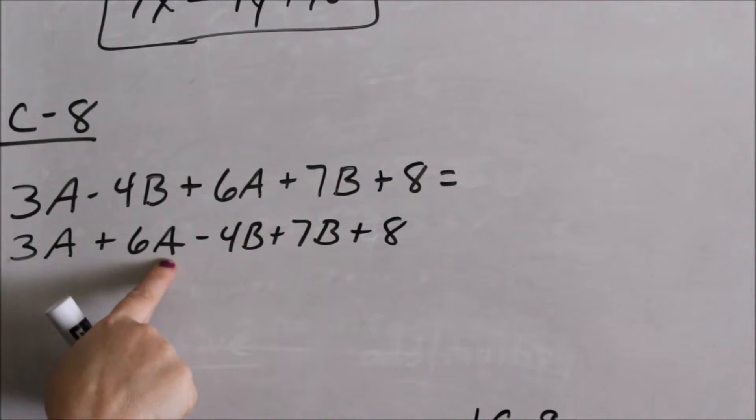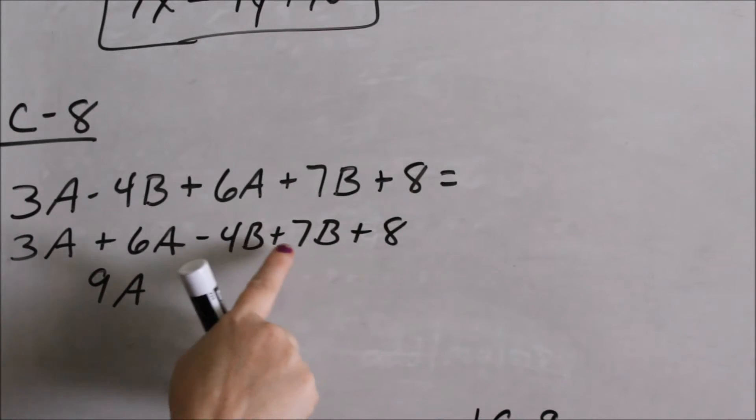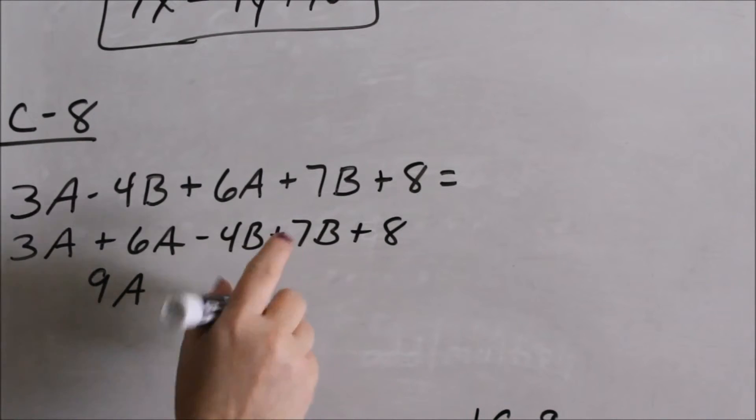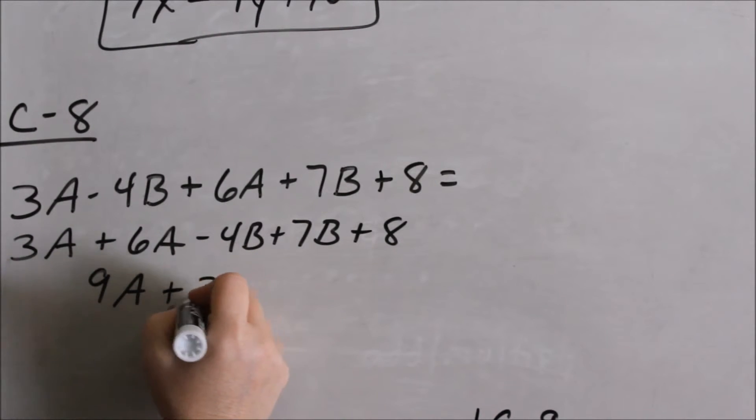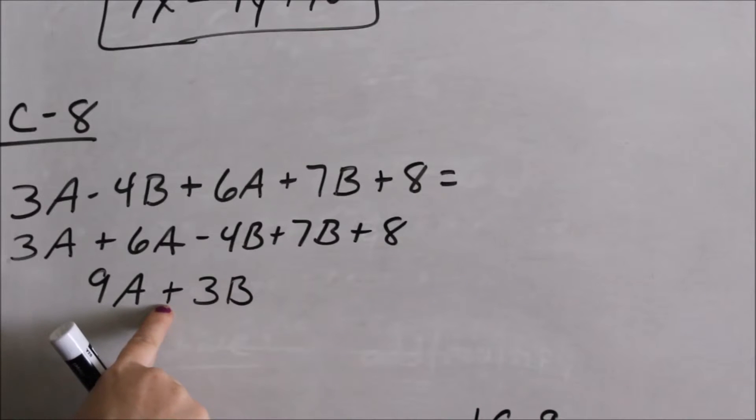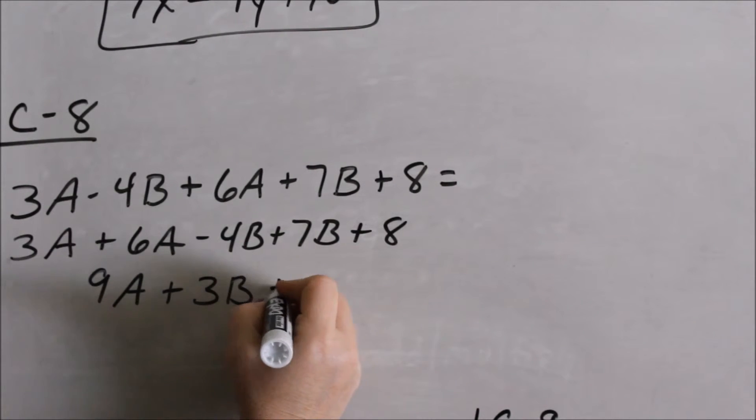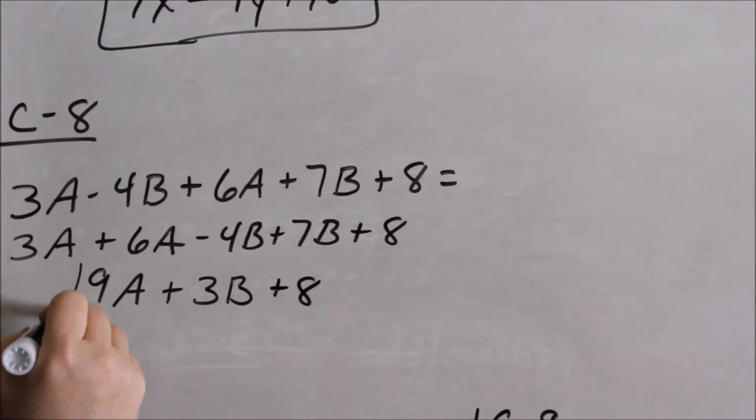I have a negative 4B and a positive 7B. I'm in debt 4, but now someone gave me $7, which means I now still have $3. I am in the positive, I have $3. And then there's nothing to add my whole numbers to, so that's as simplified as I can make it.